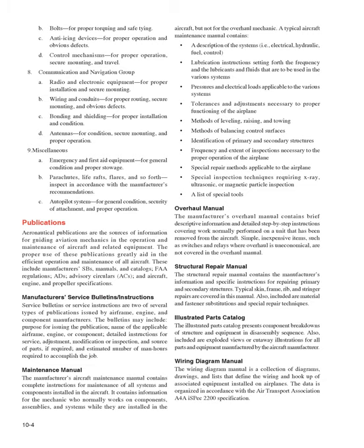The manufacturer's overhaul manual contains brief descriptive information and detailed step-by-step instructions covering work normally performed on a unit removed from the aircraft. Simple, inexpensive items such as switches and relays where overhaul is uneconomical are not covered. Publications also include manufacturer's service bulletins (SBs), manuals and catalogs, FAA structural repair manuals, regulations, ADs, advisory circulars (ACs). Service bulletins may include the purpose of issuance, name of applicable airframe or component, detailed service or inspection instructions, source of parts, and estimated man-hours required.